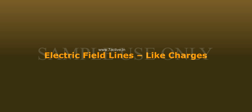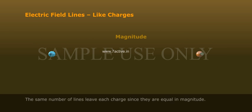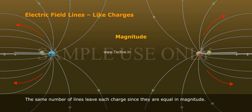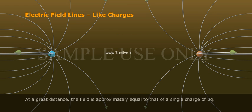Like charges: the charges are equal and positive. The same number of lines leave each charge since they are equal in magnitude. At a great distance, the field is approximately equal to that of a single charge of 2Q.